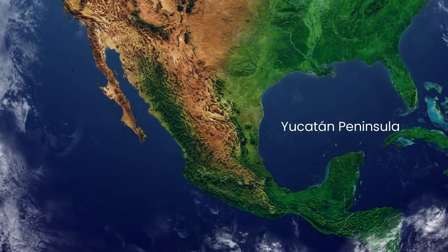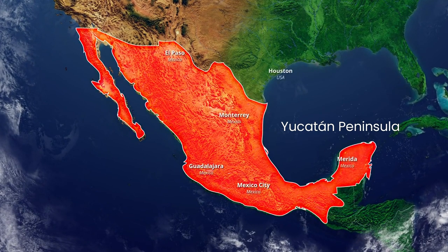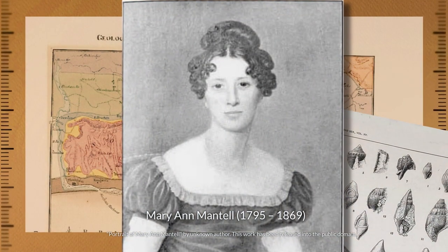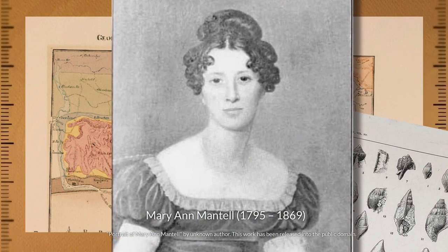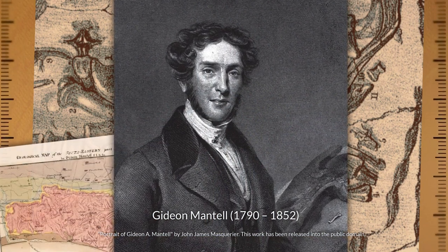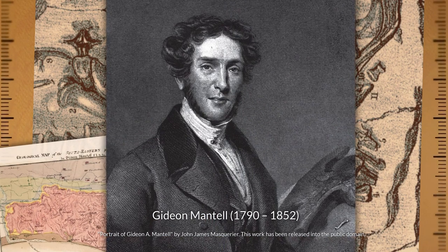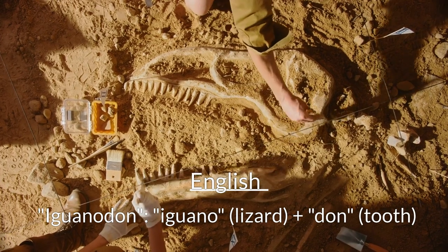The asteroid struck the Earth near the modern-day Yucatan Peninsula in the Gulf of Mexico, leaving a 180-kilometer-wide crater. The first recognized dinosaur fossil was found in 1824 in England. The discovery was made by Mary Ann Mantell, the wife of geologist Gideon Mantell, in the countryside of Sussex. The fossil consisted of a set of teeth and bones, and her husband Gideon Mantell identified them as belonging to a giant reptile, which he named Iguanodon, as the term dinosaur did not exist until 1842.